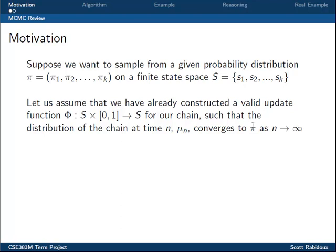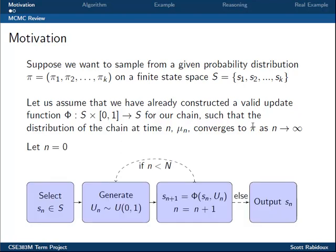A typical MCMC algorithm goes as follows. First, let n equal 0 and select an initial state as a starting point for our chain. Next, we generate a random number u sub n from a uniform (0,1) distribution. We then plug the initial state and u sub n into our update function phi to get the next state of the chain. This process is repeated over and over until n is large enough that the distribution of the chain is believed to be approximately pi, at which point the last state of the chain is outputted as our sample.